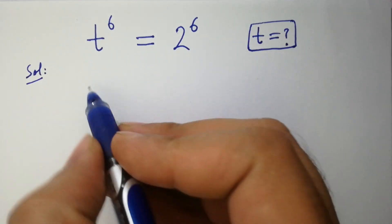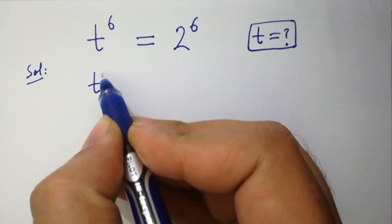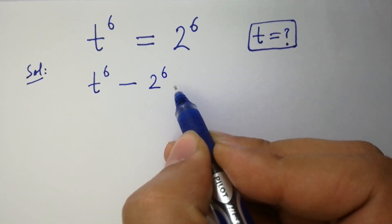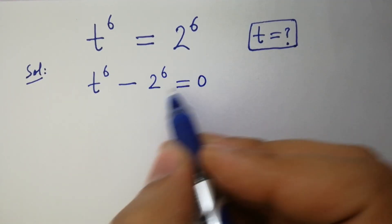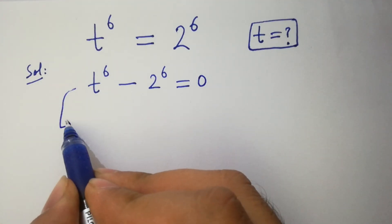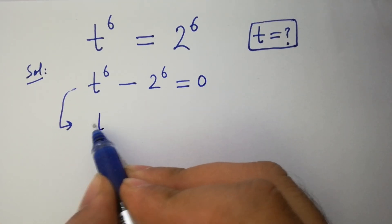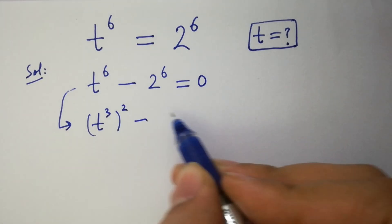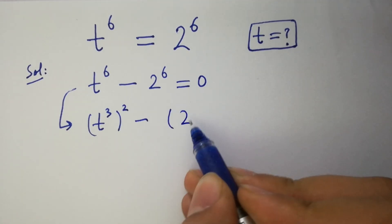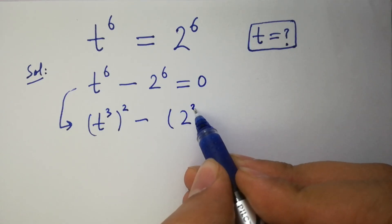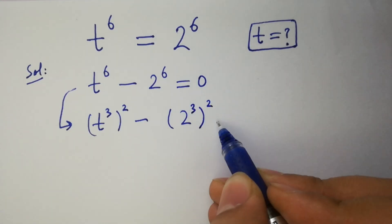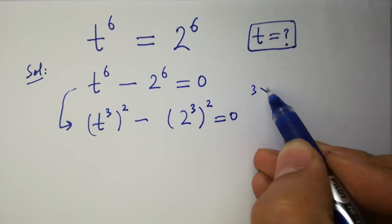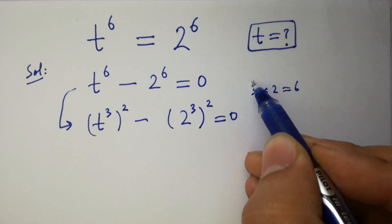This can be written as t to the power 6 minus 2 to the power 6 equal to 0, which is the same as (t³)² minus (2³)² equal to 0, since 3 times 2 equals 6.